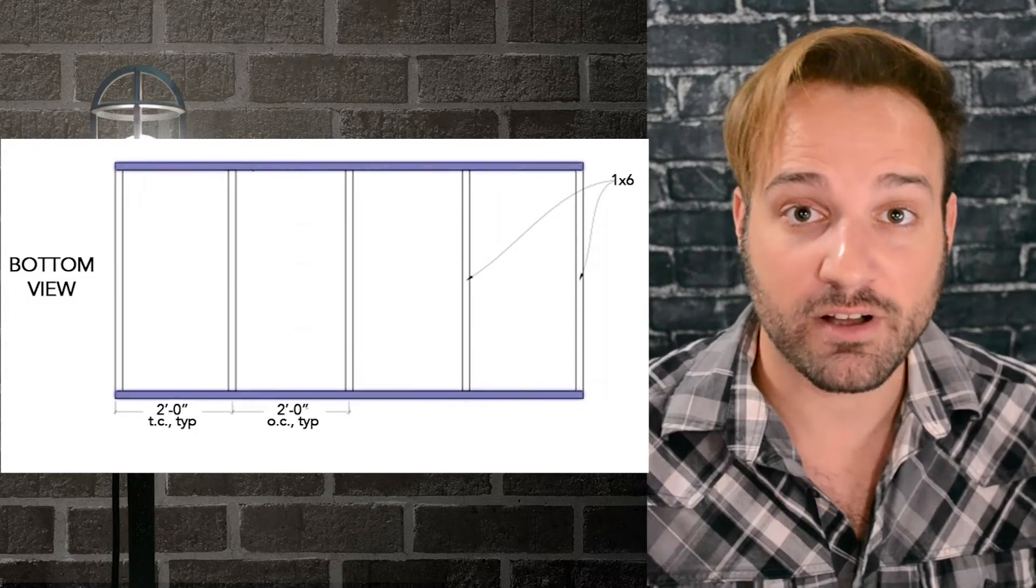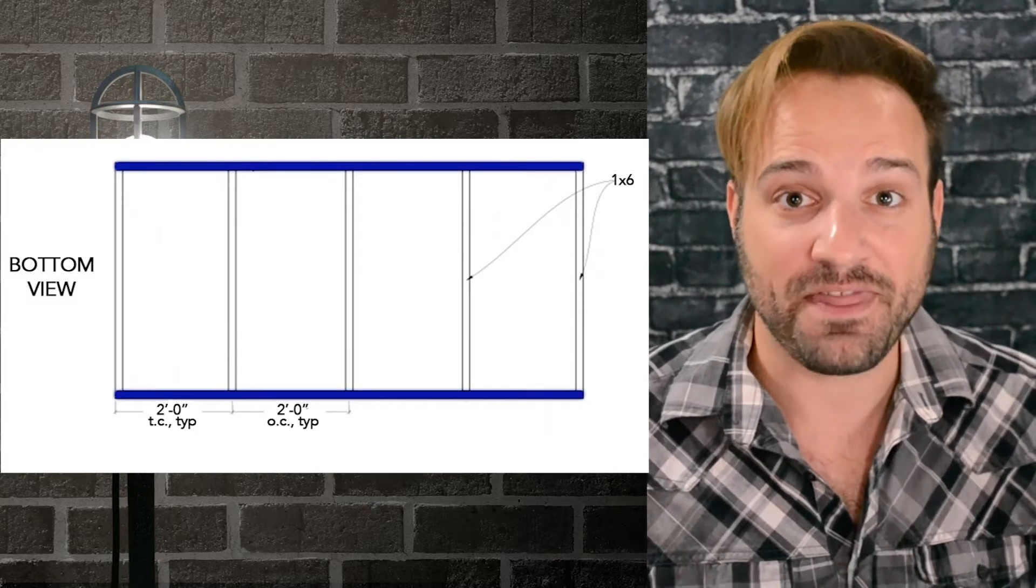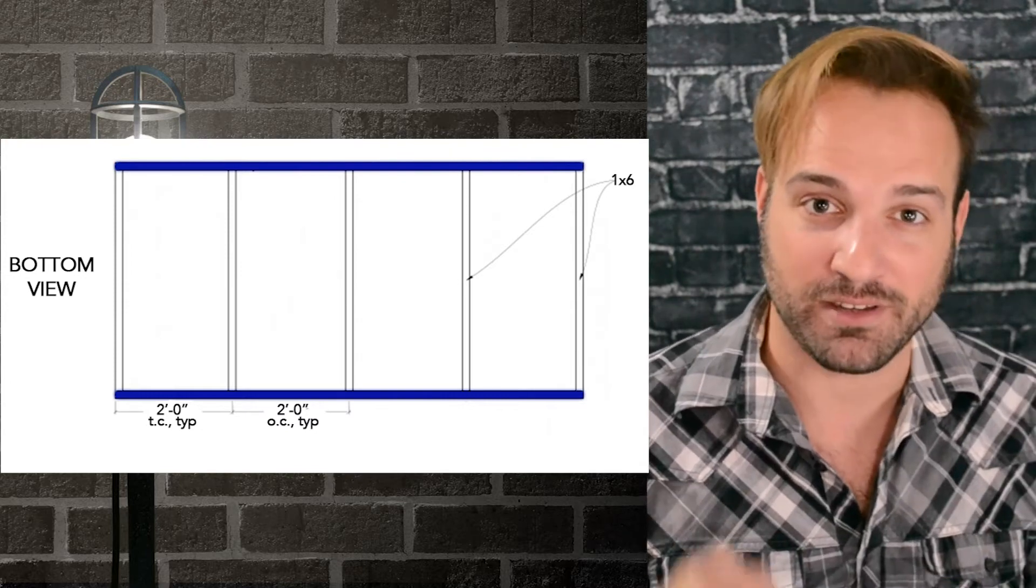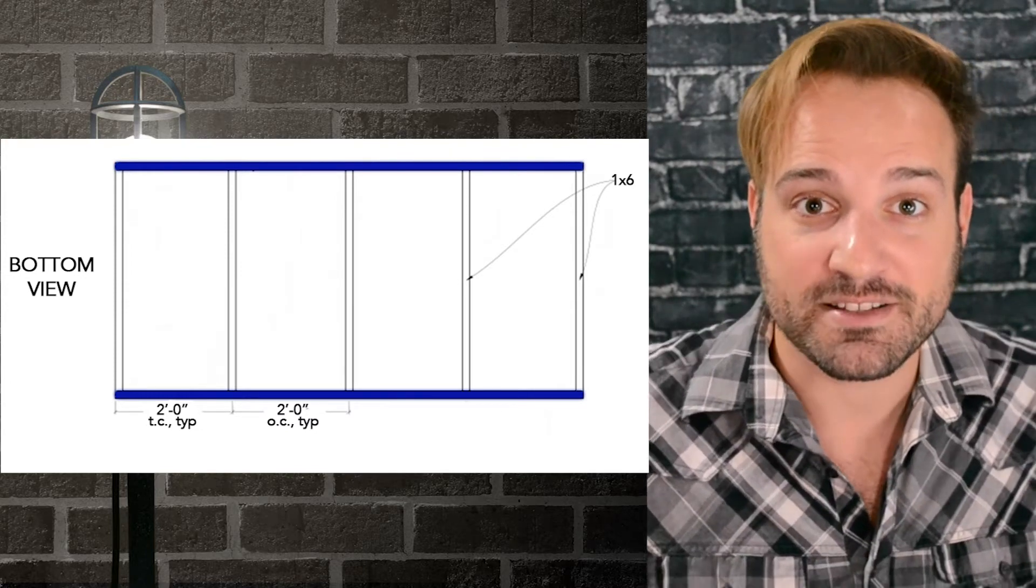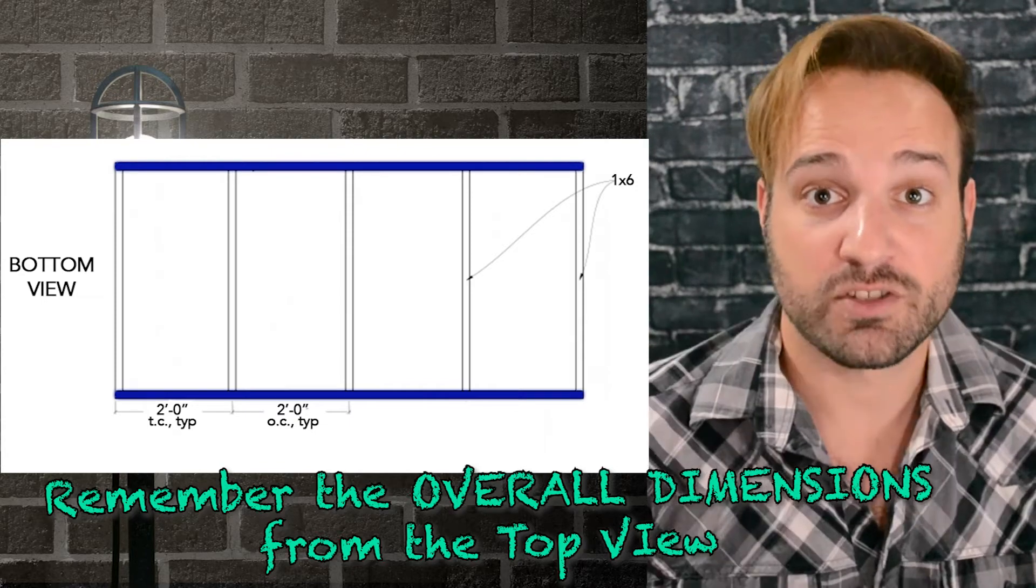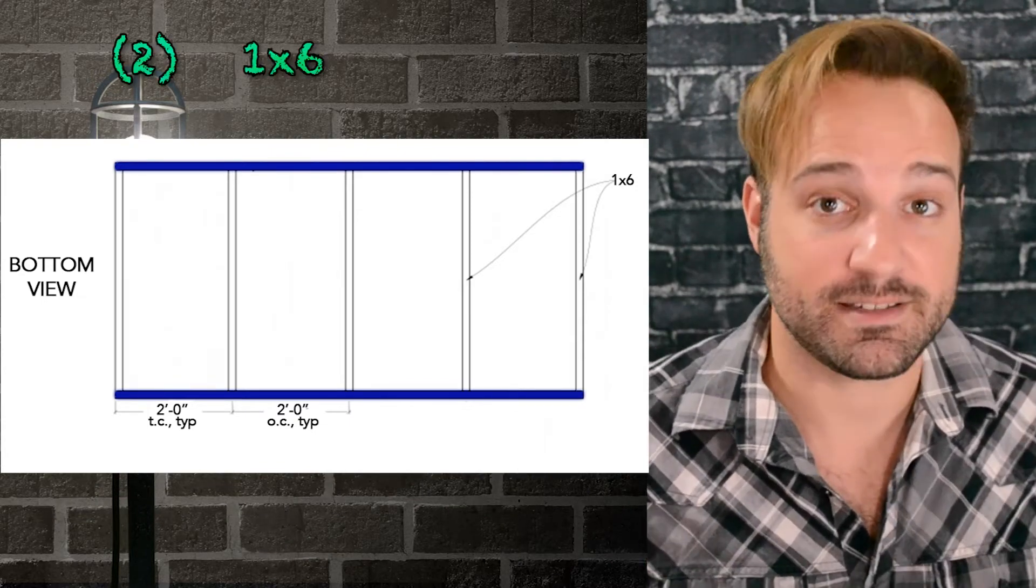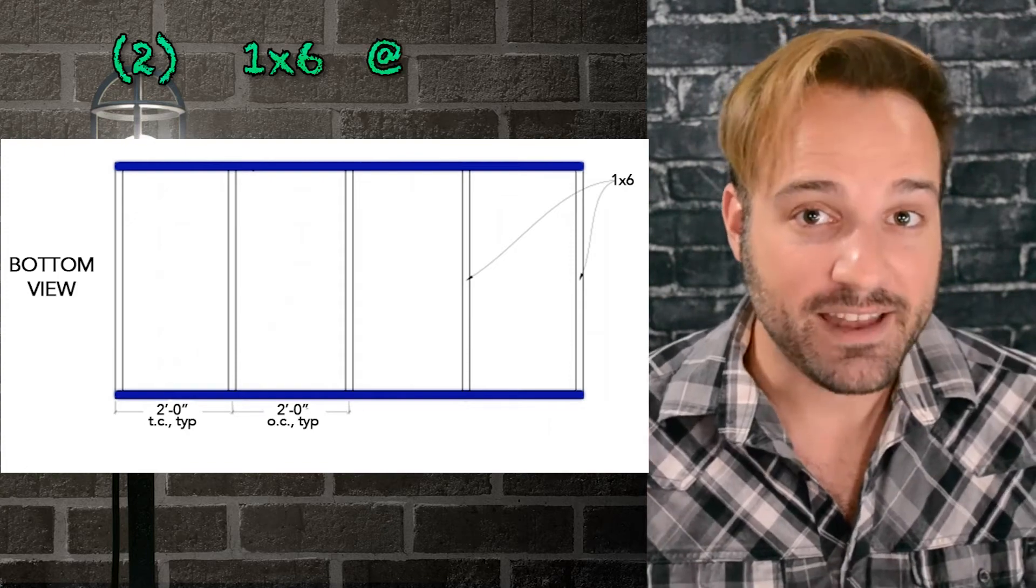So, notice how the two longest pieces go the full length. That's my next piece. What pieces go the full length that I don't have to do math for? Two pieces that are going to be eight feet long, right? Because that is the full length of the platform. So, in my cut list, I'm going to put two because that's how many I need. One by six because that's what we're making it out of at eight feet.